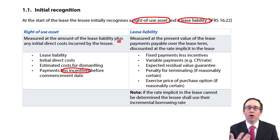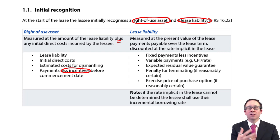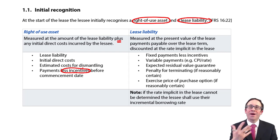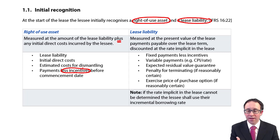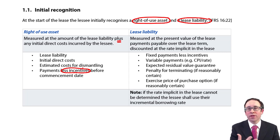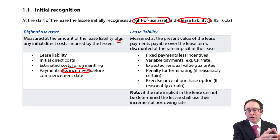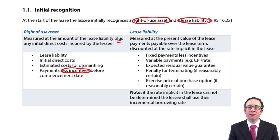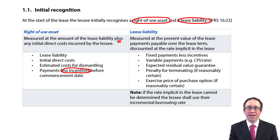Just be careful — there might then be the necessary adjustment of deducting any incentives. The lessor wants you to enter into the lease, so they might refund you some money back at the start. If that's the case, you receive the money — debit the bank — but the credit will go to the right of use asset, reducing the value of that right of use asset.